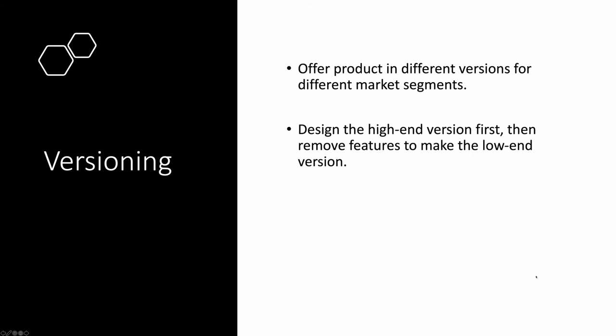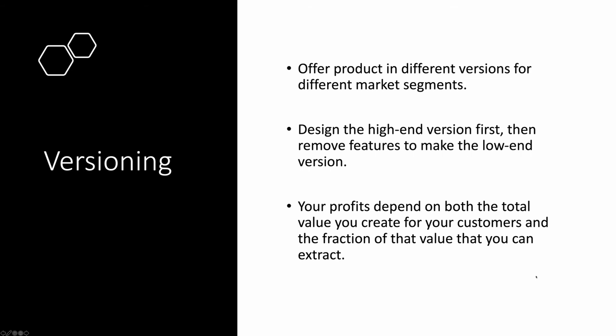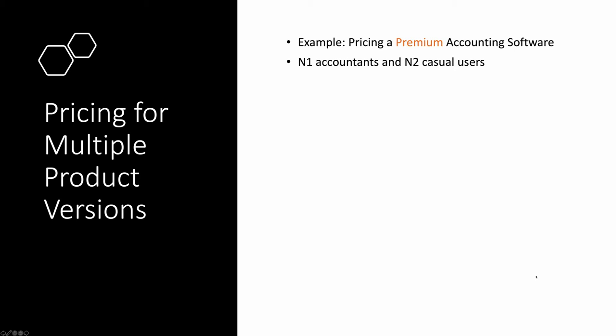The profits from versioning depend on both the total value you can create for your customers and the fraction of that value you can extract. I will use a numerical example to go through how versioning can improve profits. Suppose we have a premium accounting software. There are N1 accountants and N2 casual users in the market. For simplicity, assume all software development costs are sunk and should not be considered. For software, the unit variable cost is generally very low — we assume it to be zero.